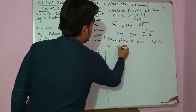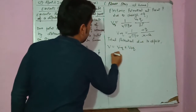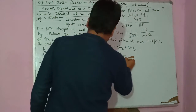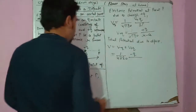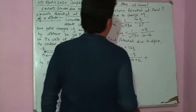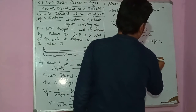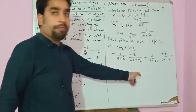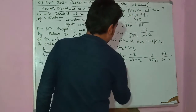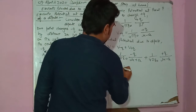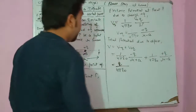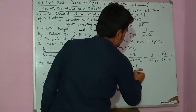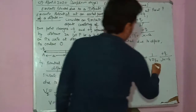The total net potential at point P due to the dipole is V = V(−Q) + V(+Q). Substituting: V = (1/4πε₀)(−Q/(R+A)) + (1/4πε₀)(Q/(R−A)). Taking Q/4πε₀ as common, we get: (Q/4πε₀) × [−1/(R+A) + 1/(R−A)].